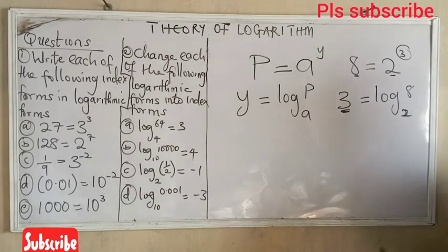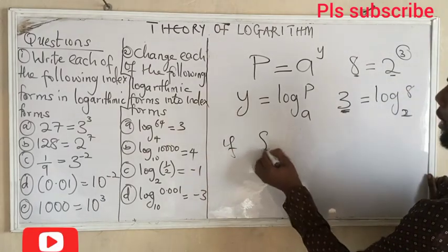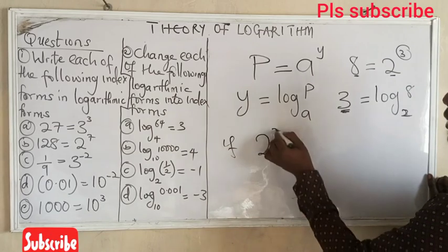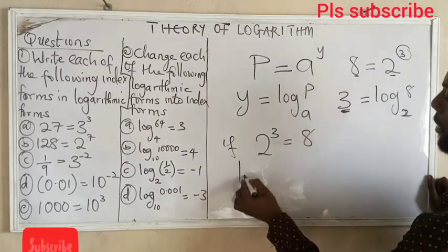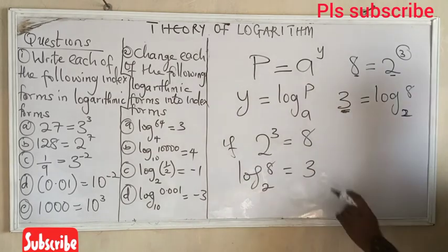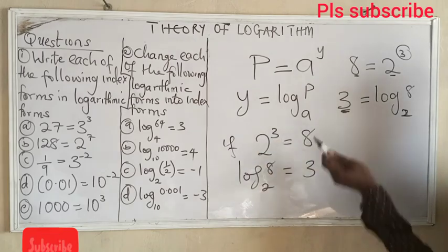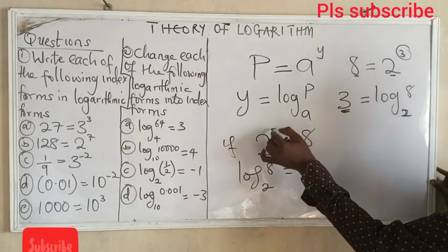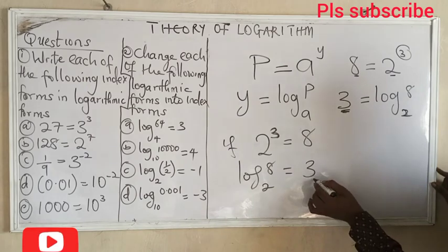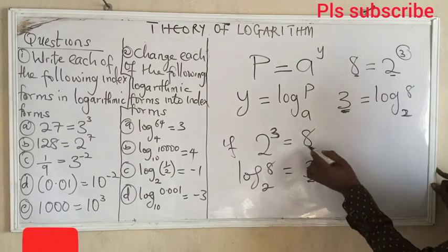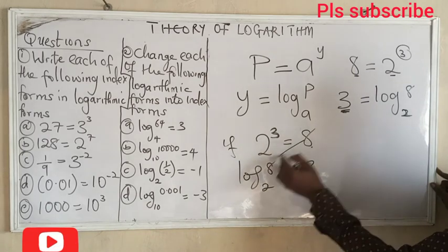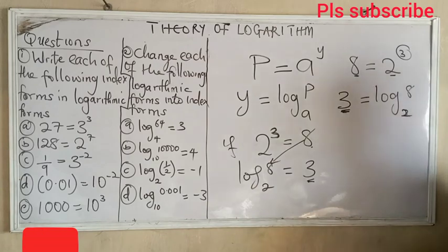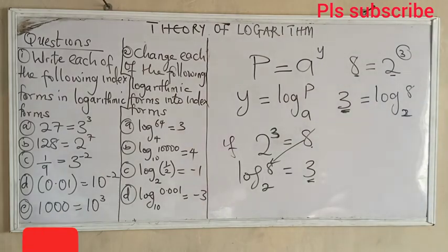What they are trying to tell us here is that if 2 raised to power 3 equals 8, then automatically log 8 base 2 equals 3. So if 2 raised to power 3 equals 8, then if I find log 8 in base 2, the answer I get is 3. This 3 happens to be my exponent — the exponent is the answer for this log. And the 8, which happens to be the result, becomes the number on this side.